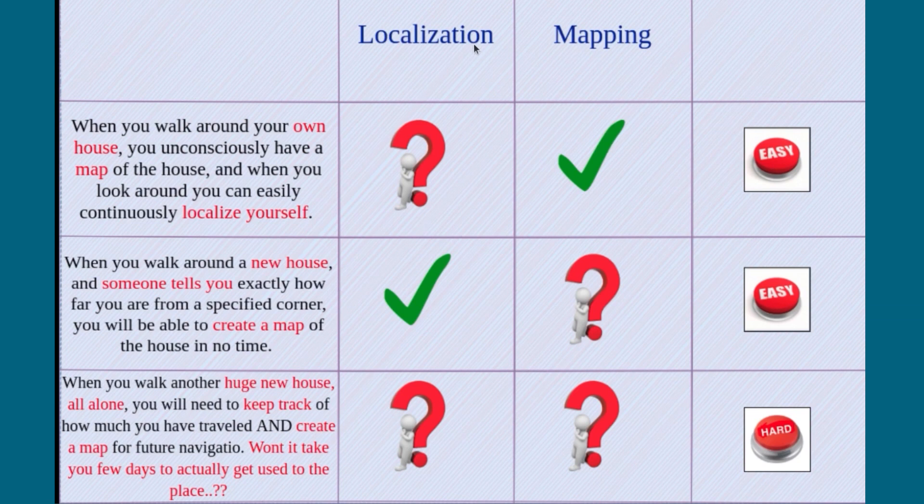So firstly, why is SLAM considered a difficult process? Yes, it is because we are trying to perform two dependent tasks simultaneously and it becomes a chicken and egg problem. Let me put this in very simple terms: when you have a map, it is easy for you to look around for features, landmarks, etc. and localize yourself. On the other hand, when you are localized, you can create a map of the surroundings and store what you see as a 3D or a spatial model.